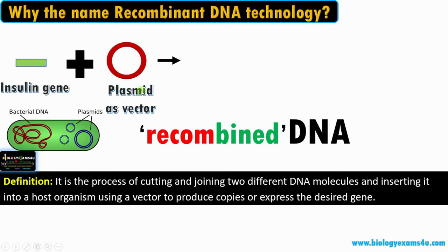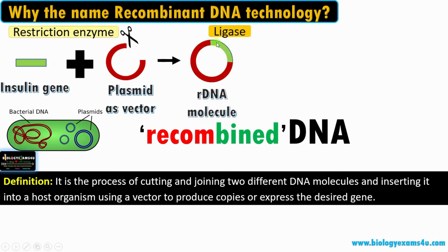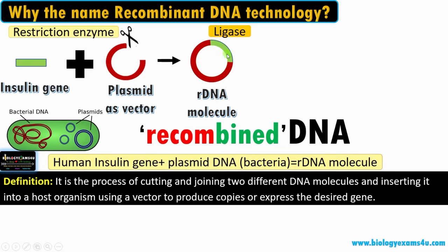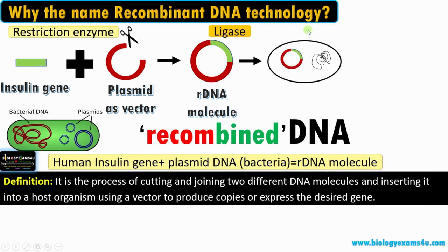We have a vector and we have our gene. We will be cutting this vector using restriction enzymes — called molecular scissors — that make specific cuts at recognition sites in a DNA molecule. The next step is inserting our gene of interest into the vector, and the nick is sealed by ligase. Ligase enzyme is responsible for the formation of phosphodiester bond. Now we have a recombinant DNA molecule: human insulin gene of human origin joined with a plasmid DNA of bacterial origin, forming a recombinant DNA molecule.